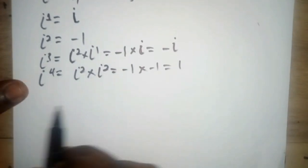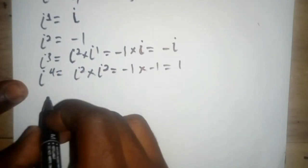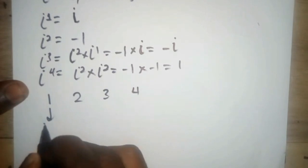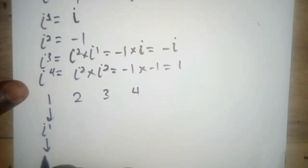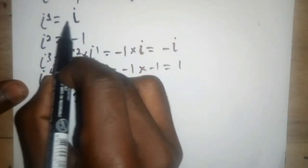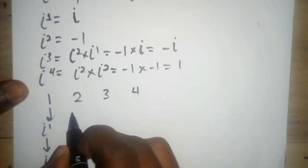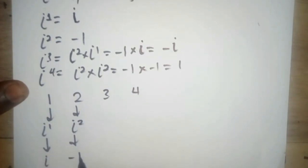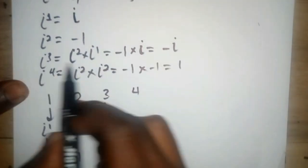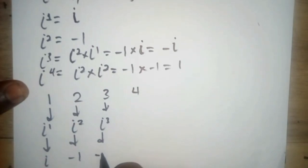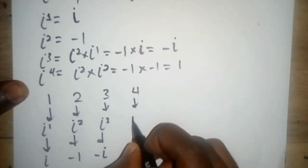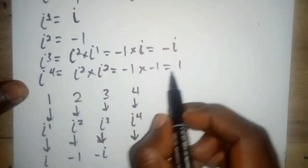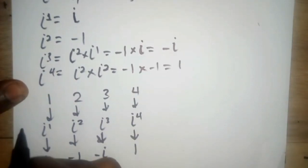In complex numbers we are only interested in these four values. Take note: i to the power one is just i; i to the power two is just negative one; i to the power three is just negative i; and i to the power four is just one. So we are only interested in these four values.